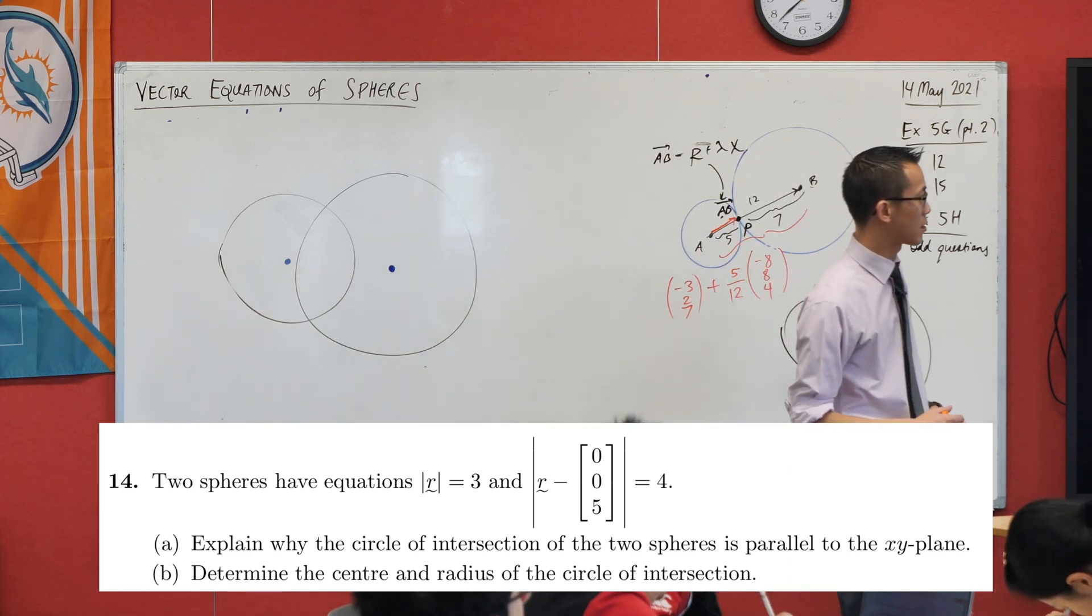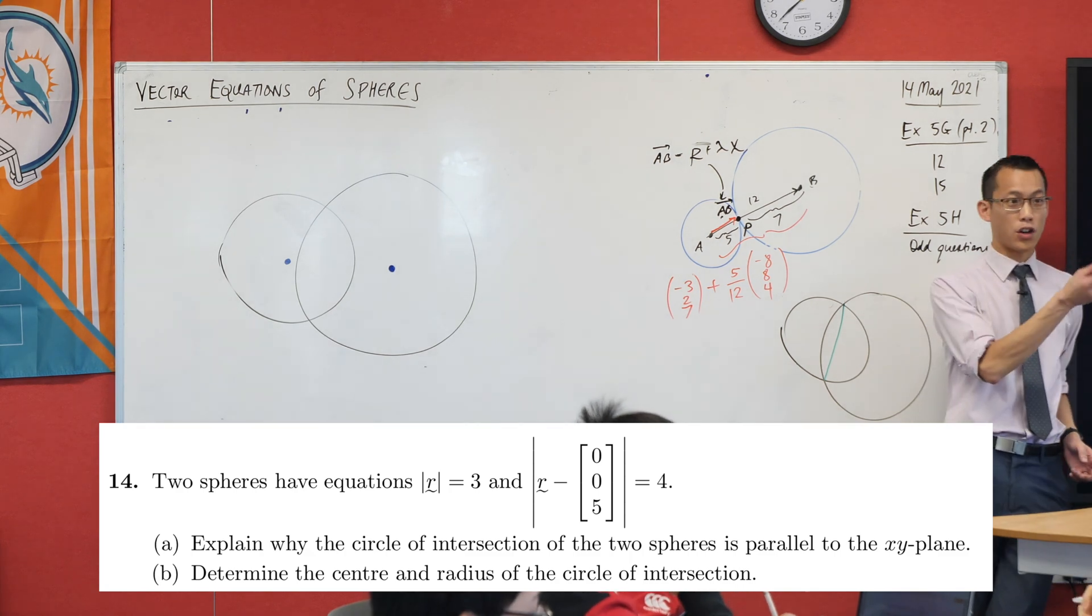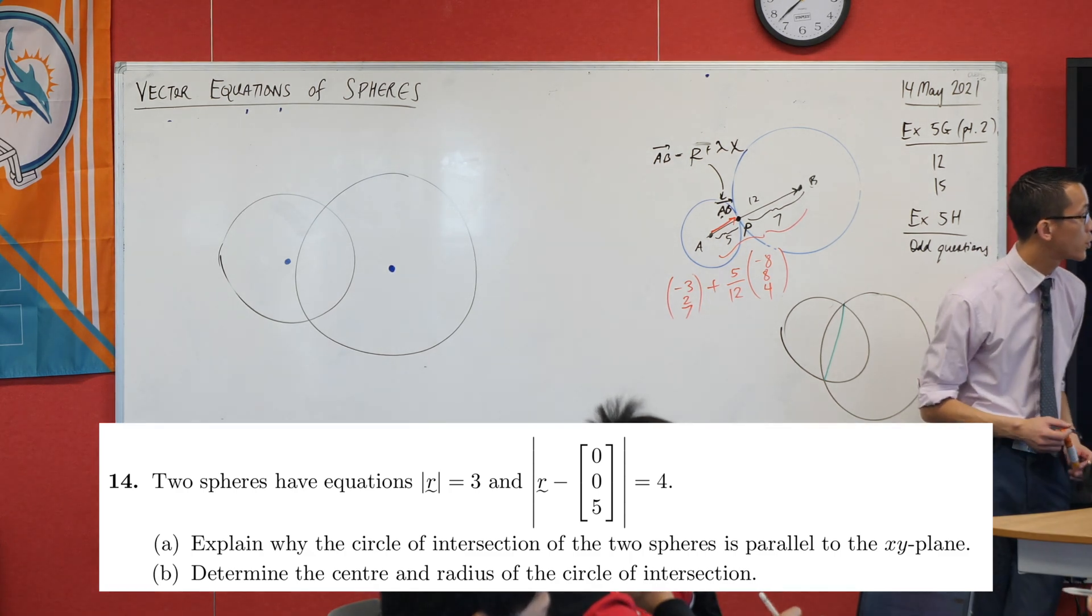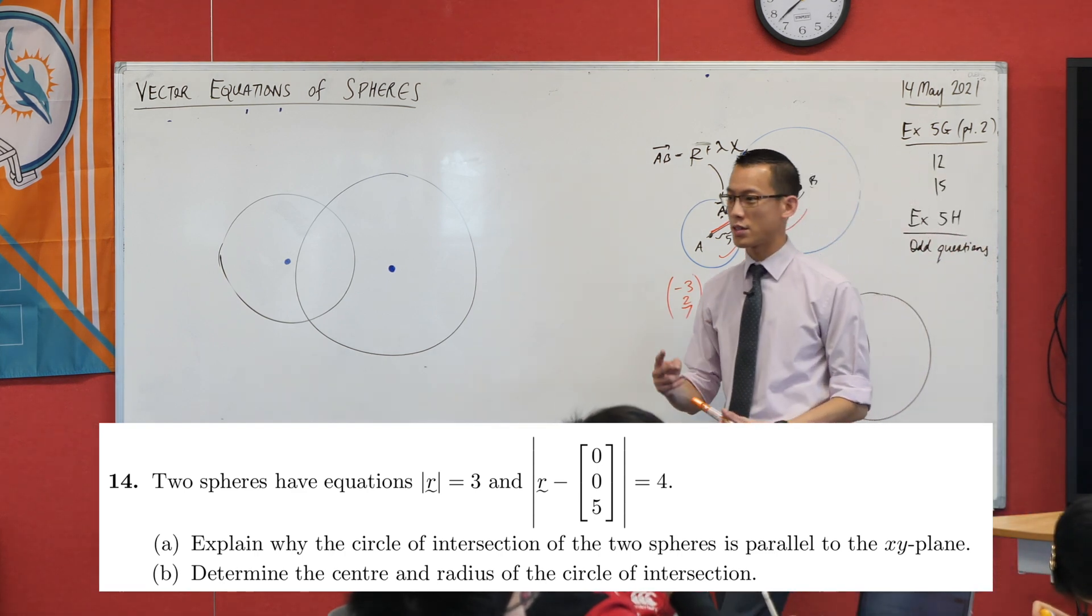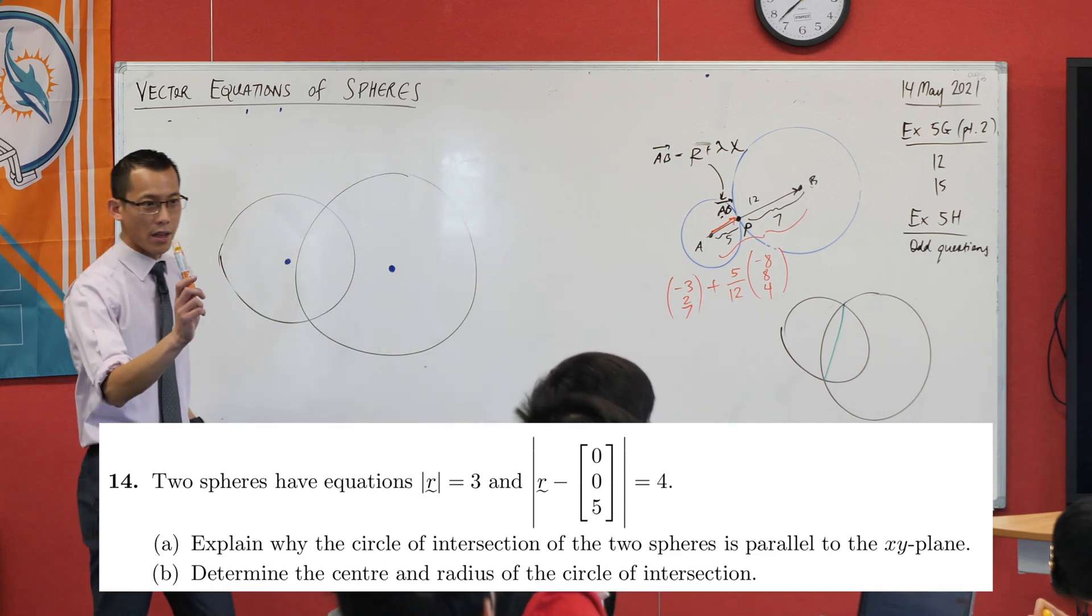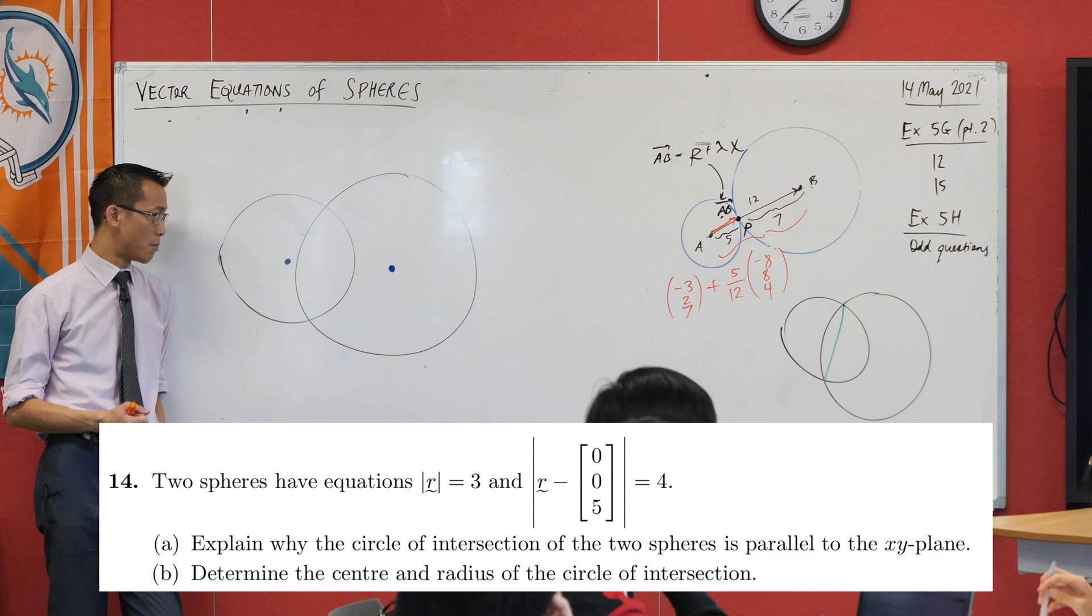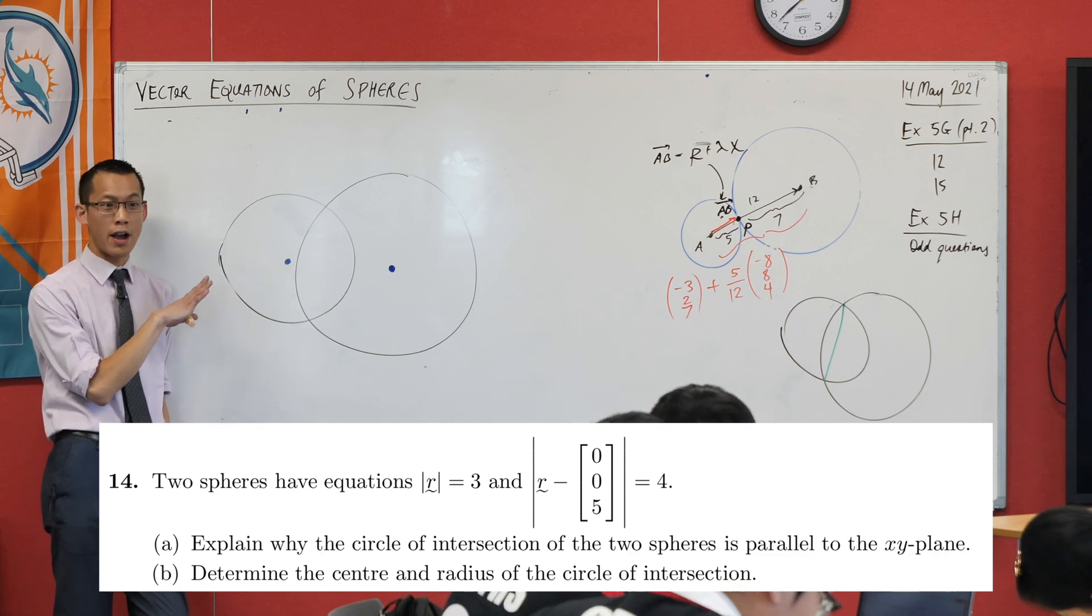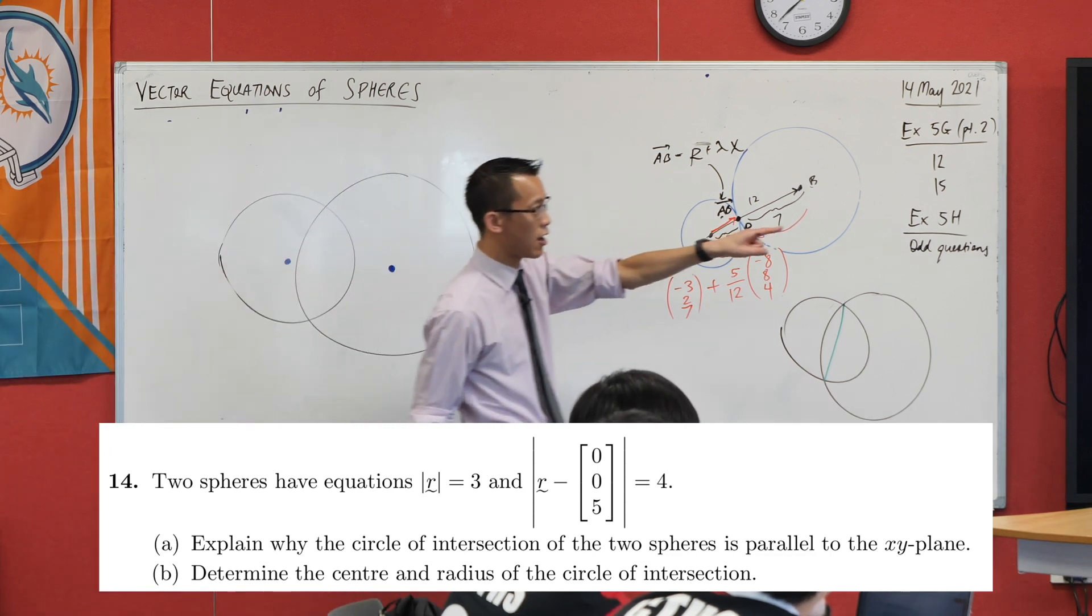Two spheres have equations |r| = 3 and a shifted sphere for the second one equals 4. Part A, explain why the circle of intersection of the two spheres is parallel to the xy plane.